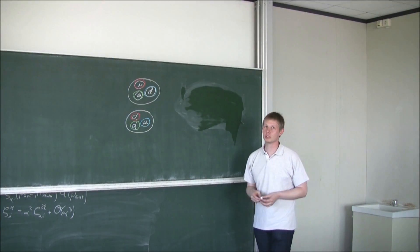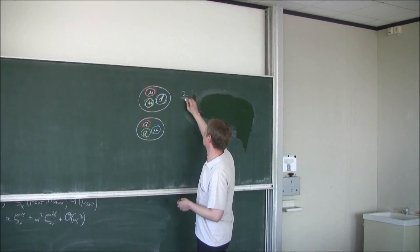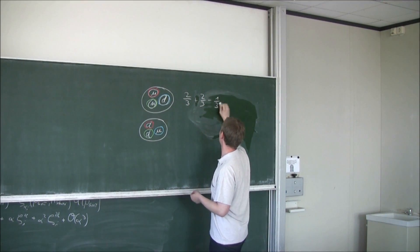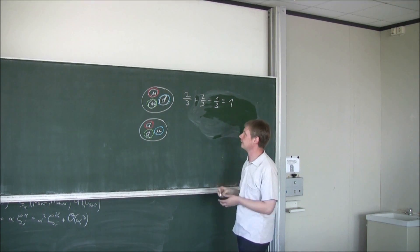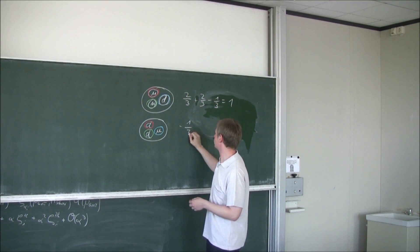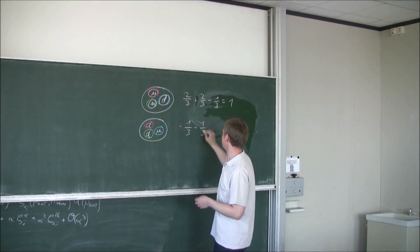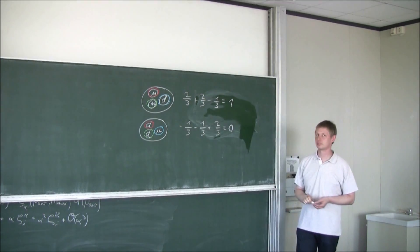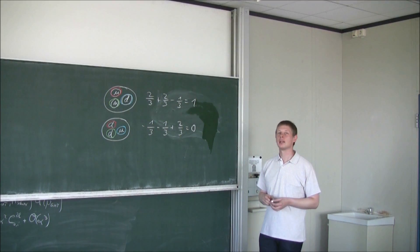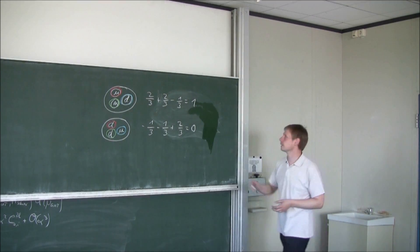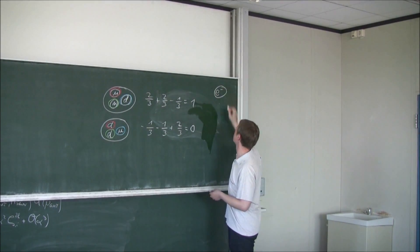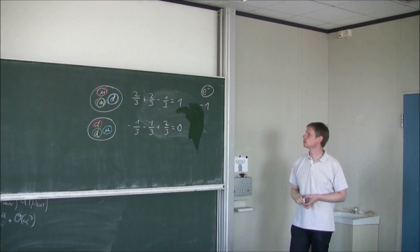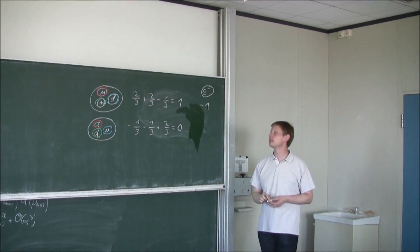Insgesamt hat das Proton also eine positive Ladung, was man folgendermaßen sehen kann: zwei Drittel plus zwei Drittel minus ein Drittel gleich eins. Und das Neutron ist elektrisch neutral. Zu jedem Proton im Atomkern gibt es ein entsprechendes Elektron in der Atomhülle, das die Ladung minus eins hat. Und damit ist das gesamte Atom elektrisch neutral.